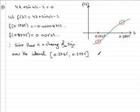So since there's a change of sign over that interval, then k must equal 0.277 to three significant figures. It obviously must lie in this interval here.